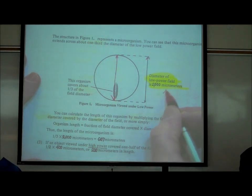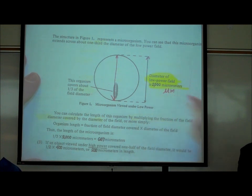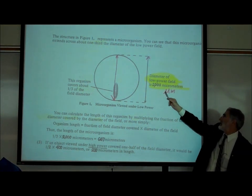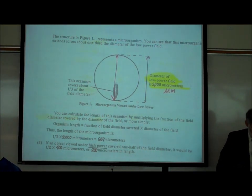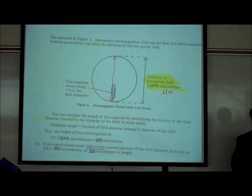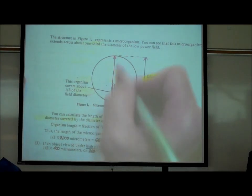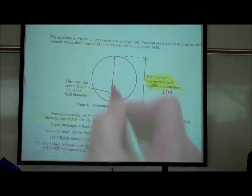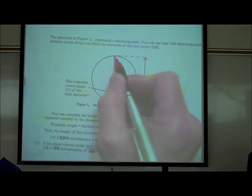We abbreviate micrometers with a script µm. So the diameter is 2,000 µm from one side to the other.